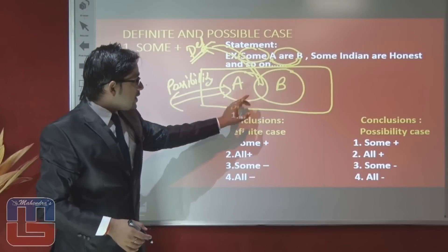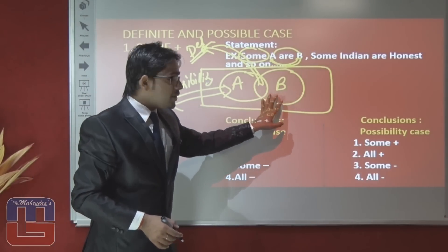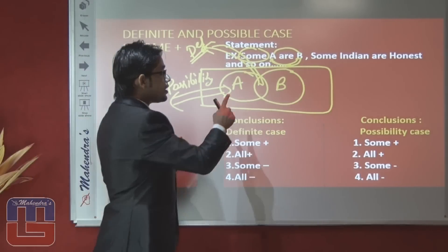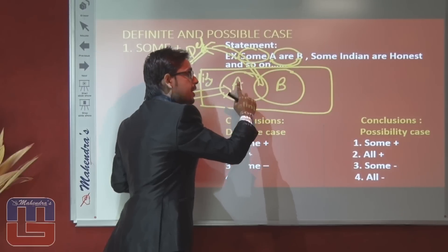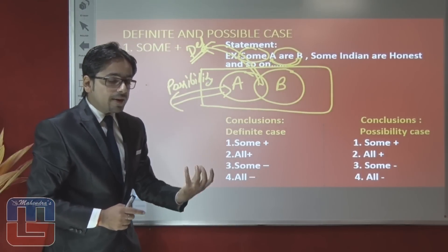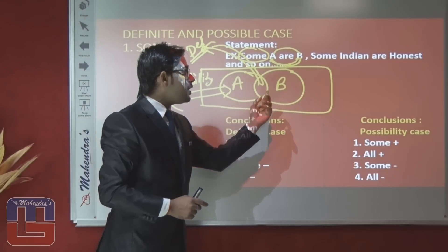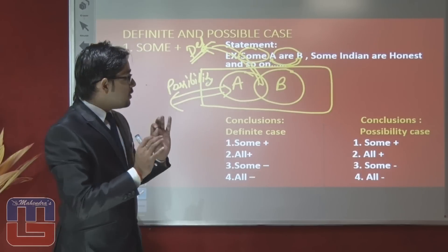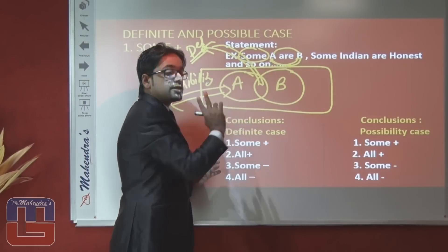Here we can see that the relation between the two entities is the same from both sides. If some A are B, that means some B are A. It doesn't matter whether we are talking about B or A — we have the same conclusion regarding this statement because both sides have the same relation.